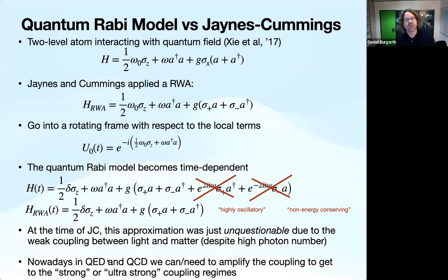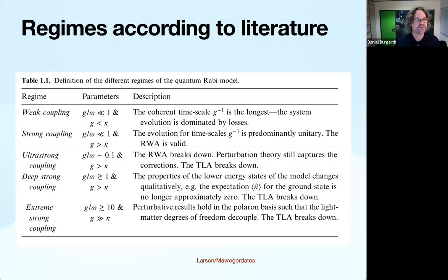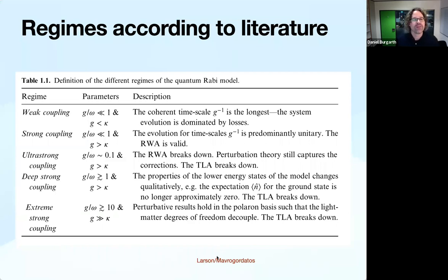When Jaynes and Cummings introduced this approximation, it was essentially unquestionable — the natural coupling between light and matter is so weak that even at high photon numbers you could neglect the counter-rotating terms. Nowadays, in quantum electrodynamics and quantum circuit dynamics, we need to amplify this coupling to reach strong or ultra-strong coupling regimes. If you look at the literature, there are all sorts of coupling regimes — it's like the coffee sizes at Starbucks: weak, strong, deep strong, extreme strong coupling. The common lore is that you should look at G/omega, and if G/omega is small enough, the rotating wave approximation is valid. In my talk I want to question this.